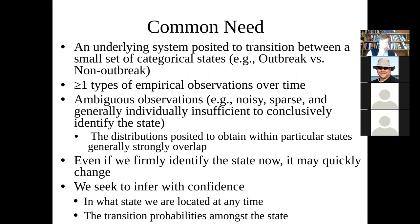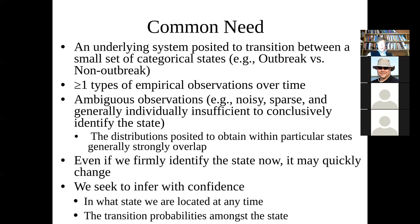Any one observation won't be enough to pin the state down, but collectively they give hints as to what that state is, because certain states produce different patterns than others. We have data coming in and some theory about how the system evolves, but any one observation is not enough to identify the state. Even if we identify the state now, it may quickly change, evolving over time.